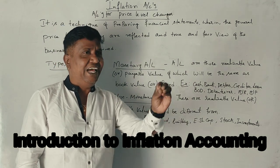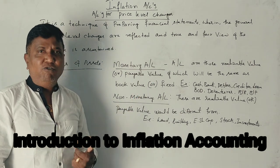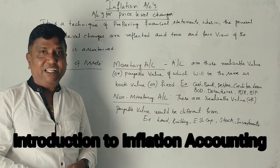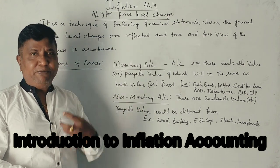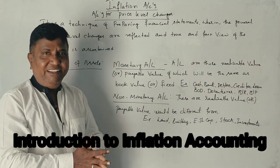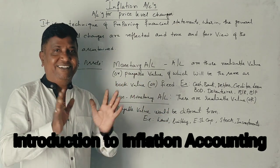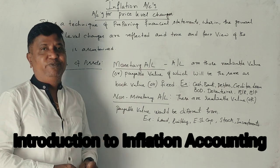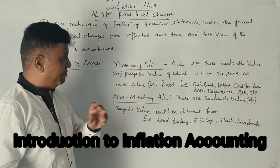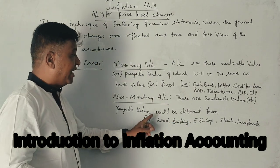For example, if we are going to receive 5 lakh rupees from debtors — whether we collect it after 3 months, 6 months, or 1 year — we are still going to receive 5 lakhs. Similarly, if we have purchased goods worth 10 lakh rupees on credit, after 1 month, 3 months, or 1 year, I have to pay 10 lakh rupees. Even if price levels change, the payable amount remains 10 lakhs. So the realizable value and payable value of monetary assets remain the same.